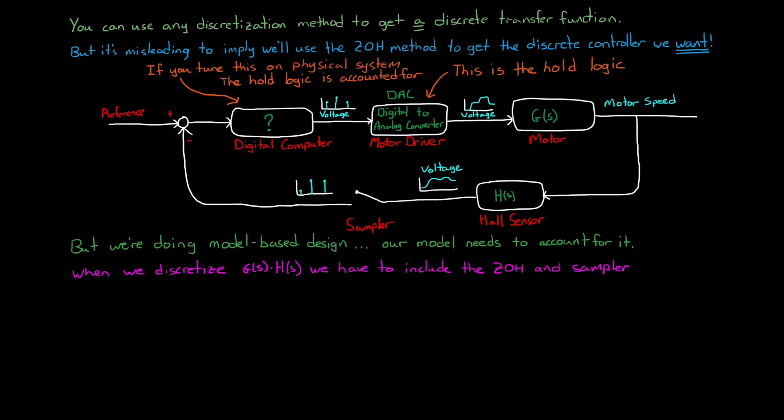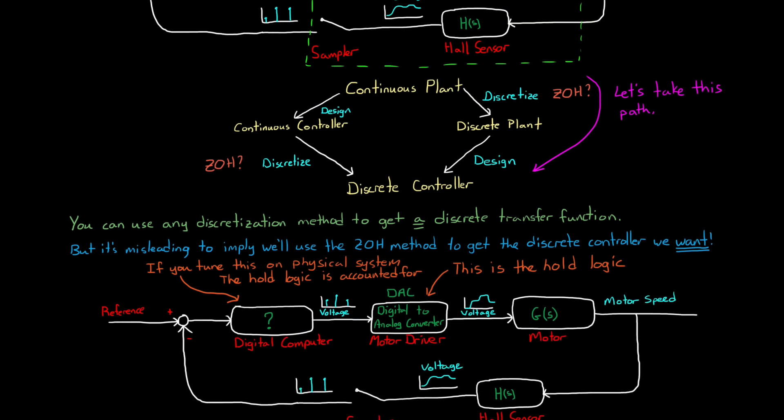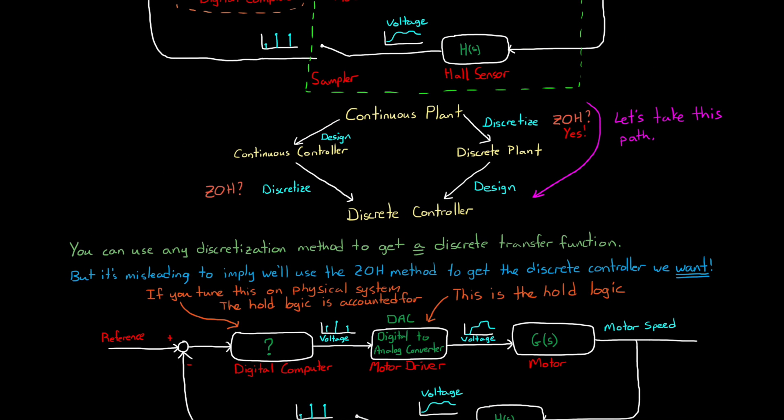If we don't include the effects of the zero-order hold when doing this discretization, then our model isn't going to reflect the real physical hardware. And when we design our controller, it won't account for the delay that the zero-order hold imparts on the system. Therefore, if you're discretizing the plant, then the zero-order hold method is a practical choice.